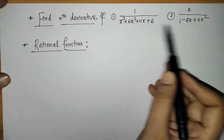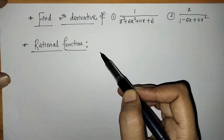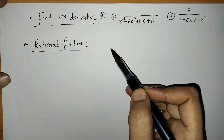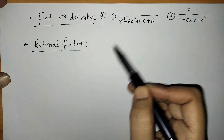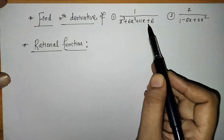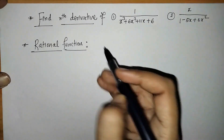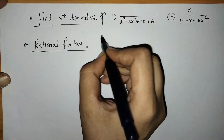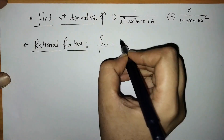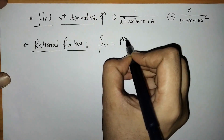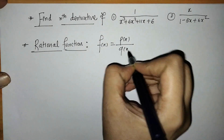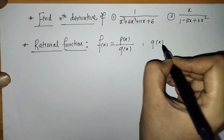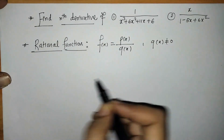These are rational functions. We know that a rational function is the ratio of two polynomial functions where the denominator polynomial is not equal to 0. That means we can write a rational function as f(x) = p(x) / q(x), where the denominator polynomial is not equal to 0.